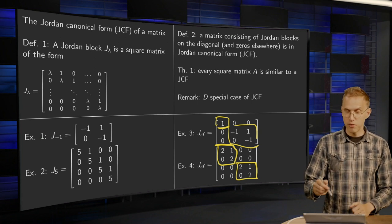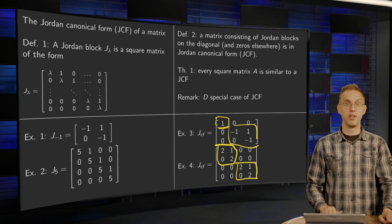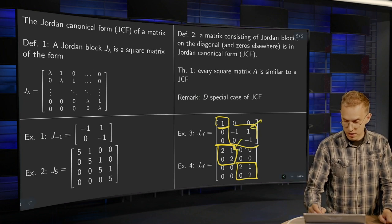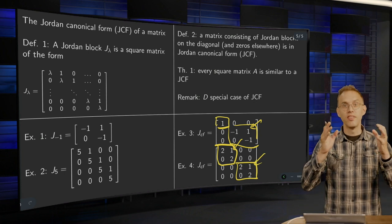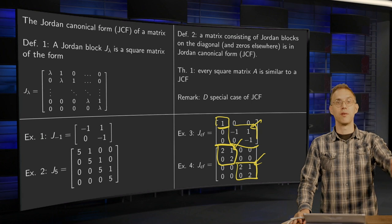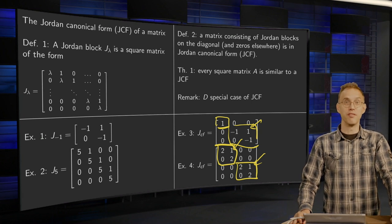And as you see, both matrices are pretty close to diagonal matrices apart from a few ones. So that is what a Jordan canonical form is. And in the following lectures, we are going to see how we can find it.